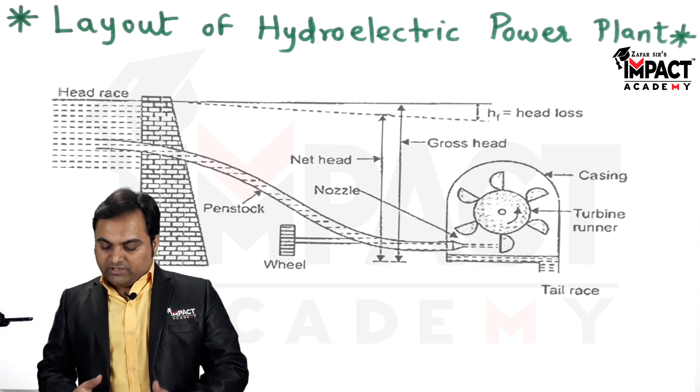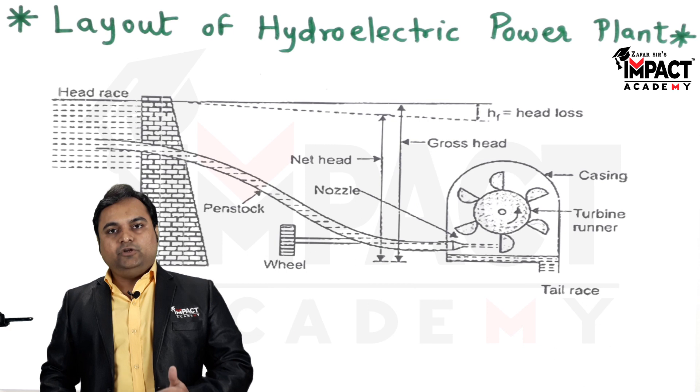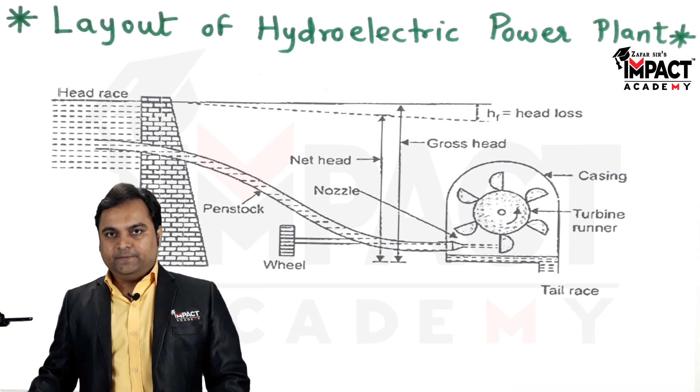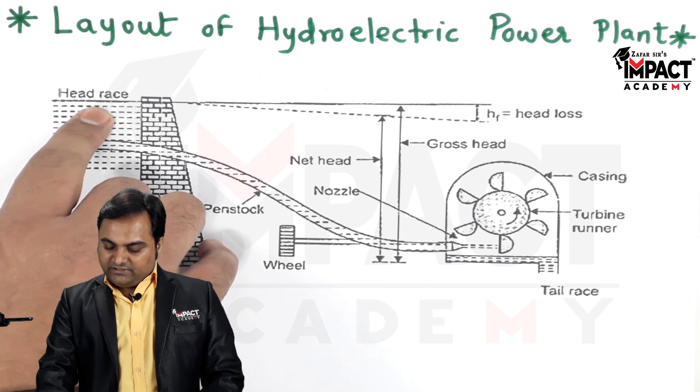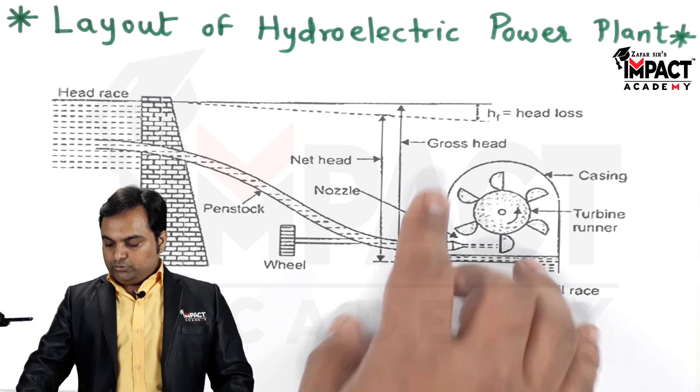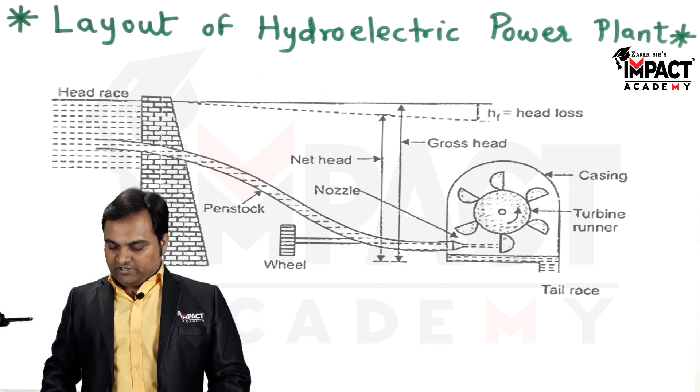Now, the concept is the more this gross head value will be, the more amount of work we are going to get at the runner. So it means that the reservoir or the dam should be located as high as possible so that the gross head would be a greater value or a maximum value.